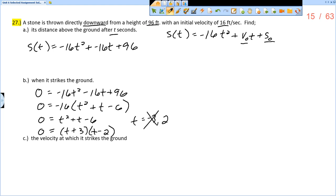Negative 3 doesn't make sense in this context because nothing is happening before time starts, before 0, and so it would take 2 seconds to strike the ground, so 2 seconds after it is thrown.